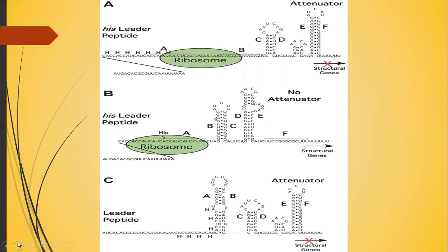In part C: under conditions where transcription from the histidine promoter is not coupled to translation, the EF attenuator is predicted to form, resulting in inhibition of further transcription into the histidine structural genes.